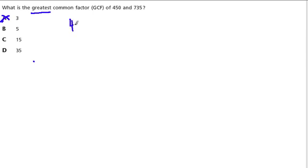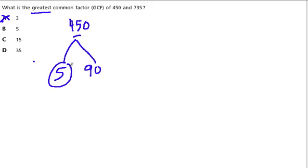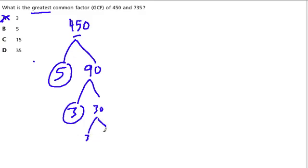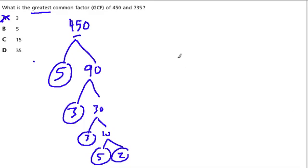I'm going to use factor trees here to solve this. I'm looking for the prime factors that will help. Five goes into 450 — five times nine is 45, so five times 90 is 450. And 90 is just three times 30, and 30 is just three times 10. I'm circling my prime numbers. A 10 is just five times 2. So let's hold on to that.